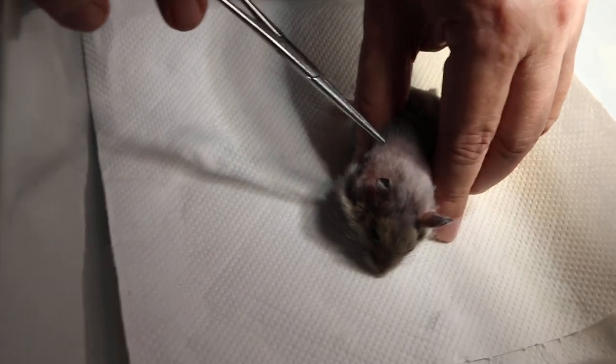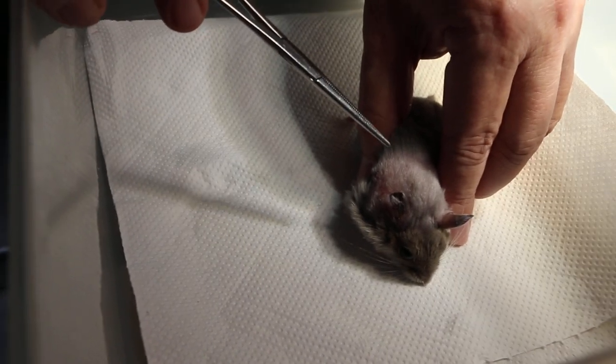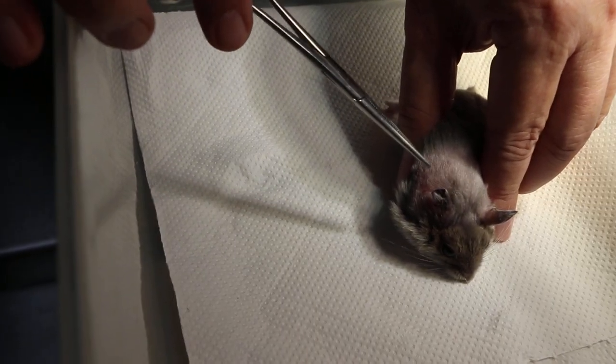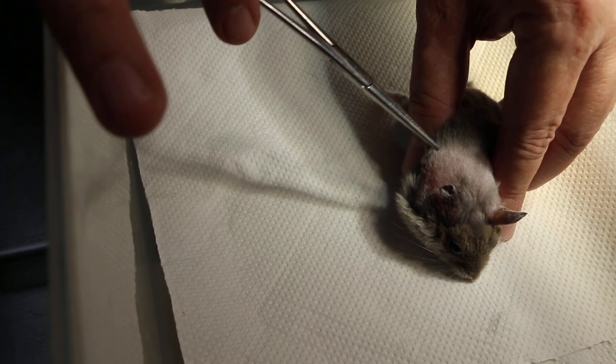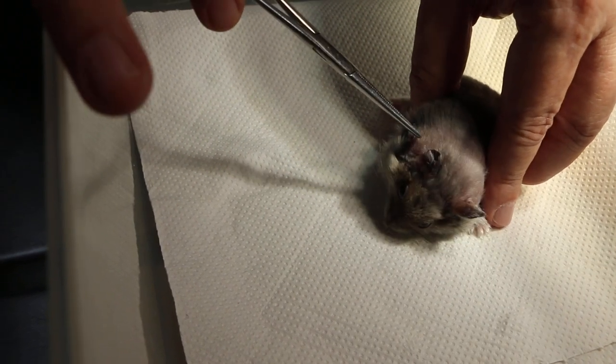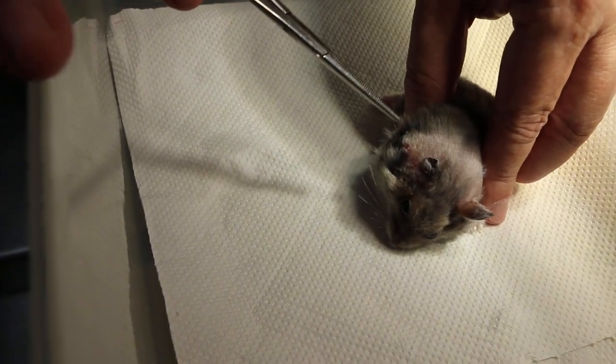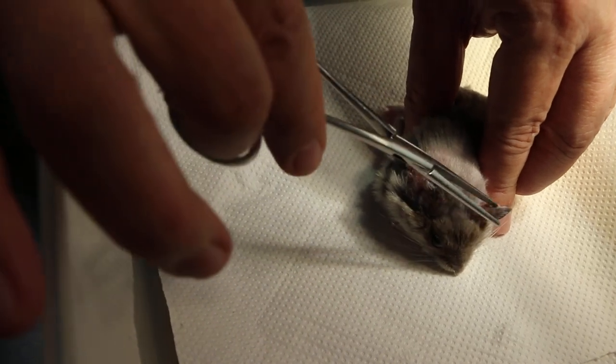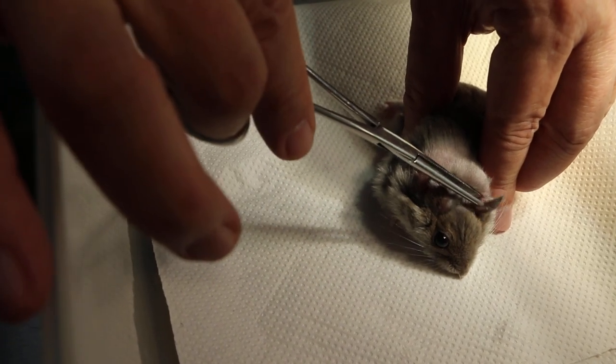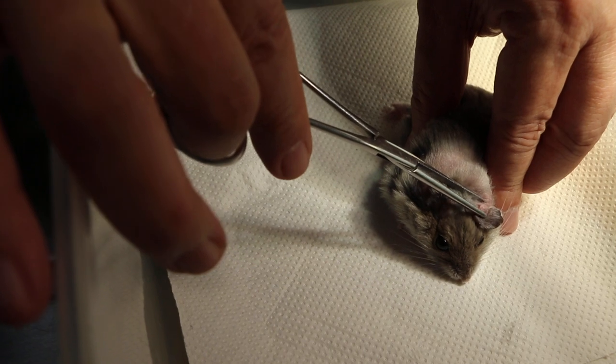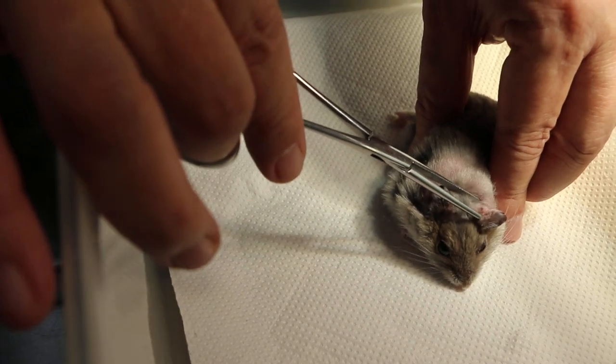So this is a case of ear warts and lumps, subcutaneous lumps. Obviously the antibiotics and anti-inflammatory did not work. And so the hamster continued to scratch and of course the owner is not happy and brought the hamster to us to have a second opinion.